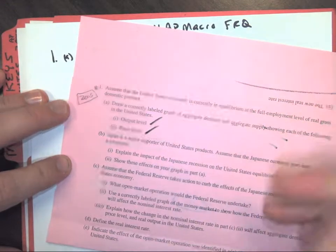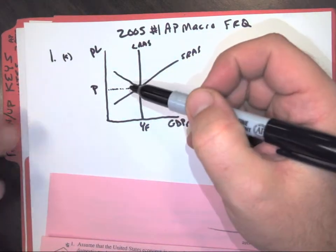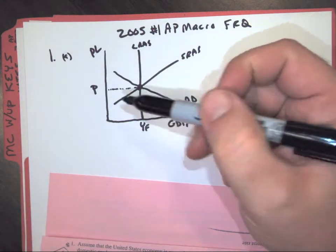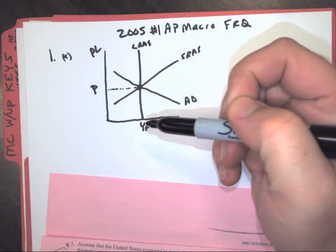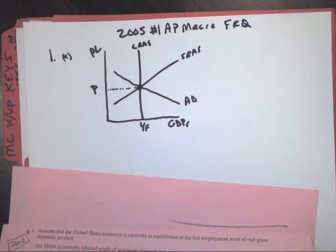Output level and price level. I got both of those. So whenever it doesn't tell you to label it PY or Y0 or whatever, just stick with price or YF and you'll be fine. If they say specifically, then label it however they tell you.